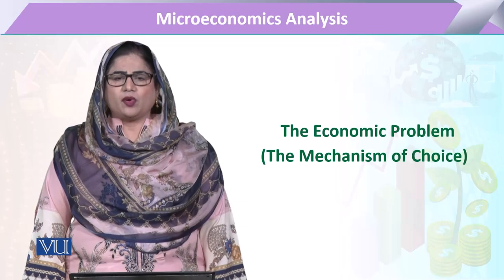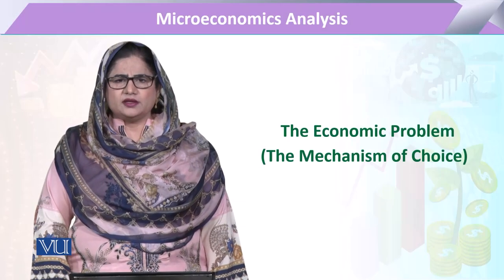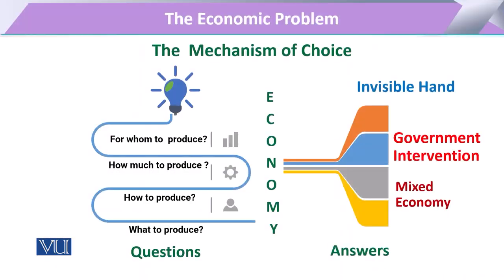The economic problem — mechanism of choice. The mechanism of choice is going to deal with the problem of allocation of resources, and for allocation of resources, how the decisions are made. These decisions particularly come under the theme of mechanism of choice.